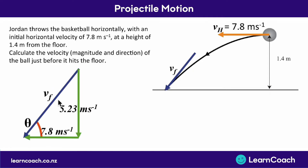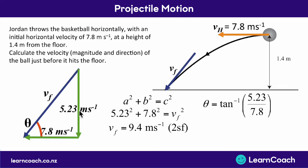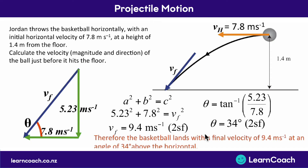To find the final velocity magnitude we use Pythagoras: a² + b² = c². So 5.23² + 7.8² gives us the final velocity squared; square rooting gives vf = 9.4 meters per second. For the angle, we use inverse tan of 5.23 divided by 7.8, which gives 34 degrees. Therefore the basketball lands with a final velocity of 9.4 meters per second at an angle of 34 degrees to the horizontal.